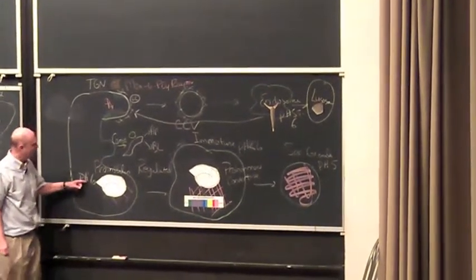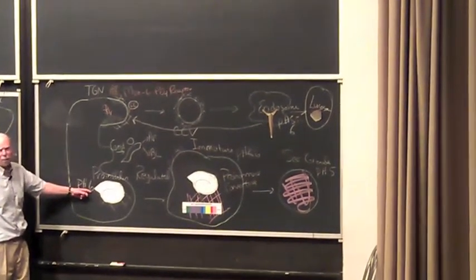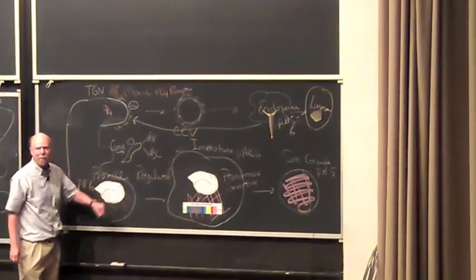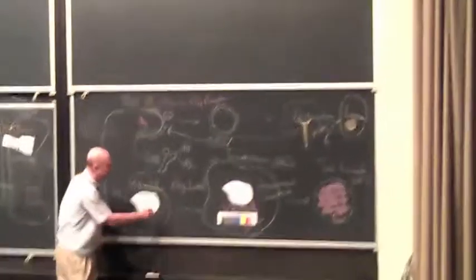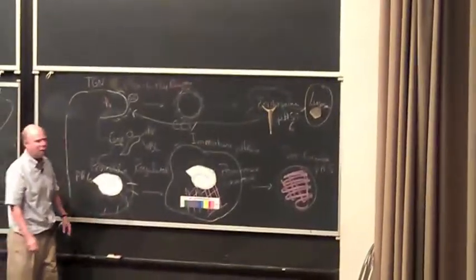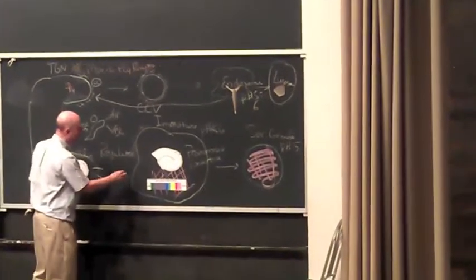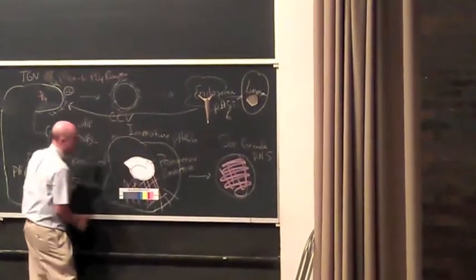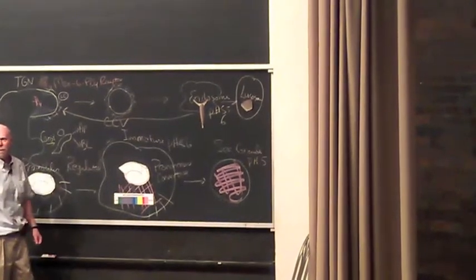Pro-insulin tends to aggregate at low pH. And it turns out that the pH of the trans-Golgi network is about pH 6. And that means this begins to aggregate at that point. Other proteins aggregate with it, including, as my lab has shown, some membrane proteins. Those membrane proteins and soluble proteins pinch off into something called an immature secretory granule.